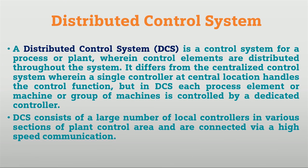Distributed control system or DCS is a control system for any process or plant where control elements are distributed throughout the system or network. It differs from centralized control, where a single controller at a central location handles the total system, but in DCS every process element has its own dedicated control.